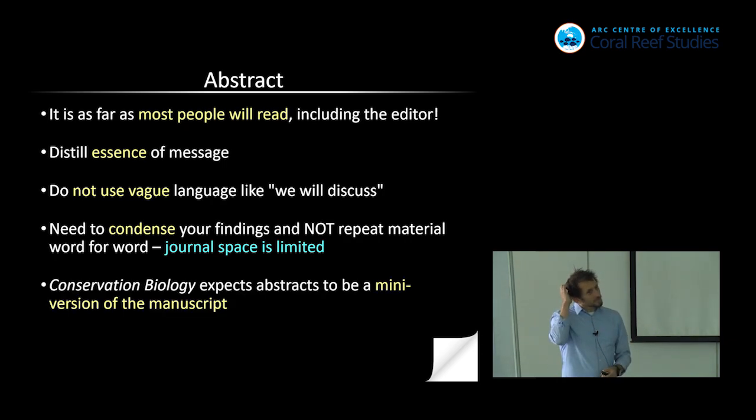What I often see is people like the way they've written a sentence and then just cut and pasted that in there. Journal space is extremely limited and there is zero space for repetition. You can't say the same sentence twice when there's such competition for space. So you have to say it in a better, more condensed way. I edit for conservation biology, so I use that as an example a lot of times. They expect the abstracts to be a sort of mini version of the manuscript. You've got all of the elements of the manuscript in there.